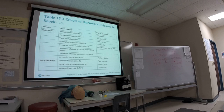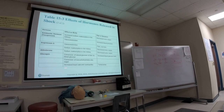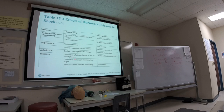Epinephrine has all three receptor properties — alpha, beta-1, and beta-2 — causing vasoconstriction, increased heart rate, and bronchodilation respectively. The RAAS system also involves glucagon, which is stored in the liver. When the body needs it, it's converted to glucose for energy — though the supply is limited.